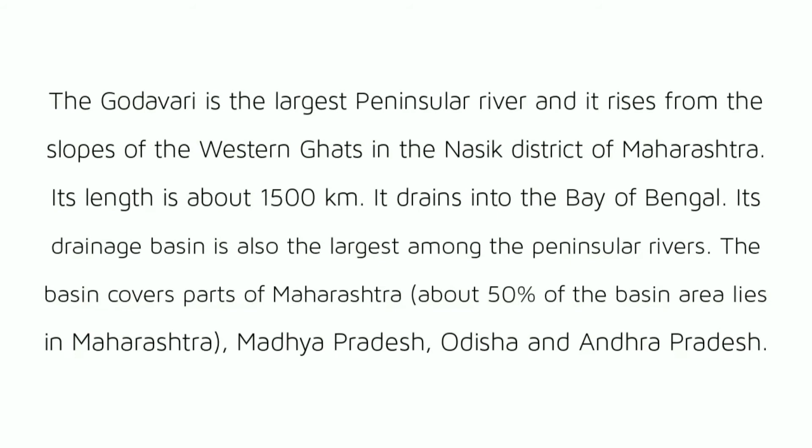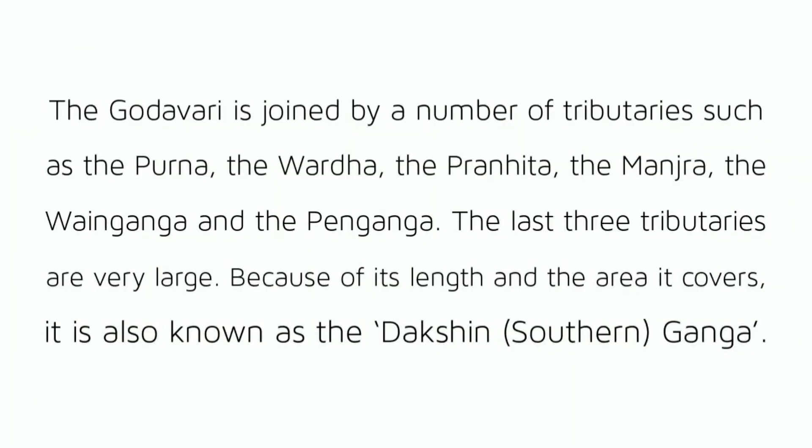The Godavari Basin: The Godavari is the largest peninsular river and it rises from the slopes of the Western Ghats in the Nasik district of Maharashtra. Its length is about 1500 km and it drains into the Bay of Bengal. Its drainage basin is also the largest among the peninsular rivers, covering parts of Maharashtra, Madhya Pradesh, Odisha and Andhra Pradesh. The Godavari is joined by a number of tributaries such as the Purna, the Wardha, the Pranhita, the Manjra, the Wainganga and the Penganga. Because of its length and the area it covers, it is also known as the Dakshin Ganga.